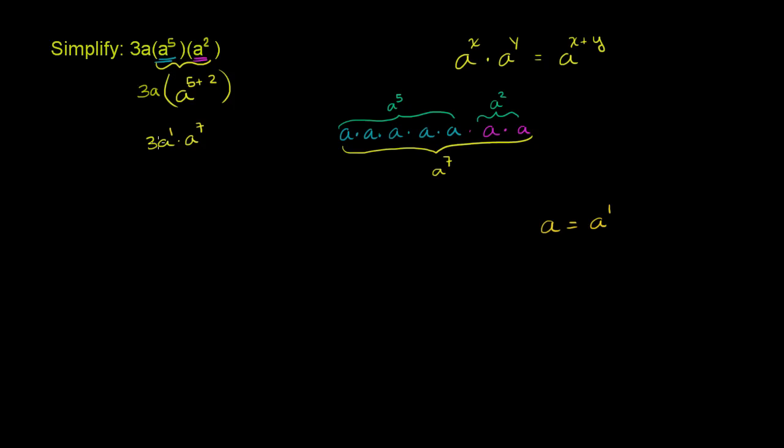a to the first power. And by the associative property of multiplication, I can do the multiplication of the a's before I worry about the three. So I can multiply these two first. a to the first times a to the seventh. I just have to add the exponents because I have the same base and I'm taking the product. That's going to be a to the eighth power. And I still have this three out front. So 3a times a to the fifth times a squared simplifies to 3a to the eighth power.